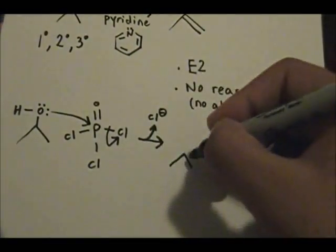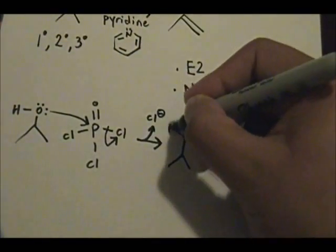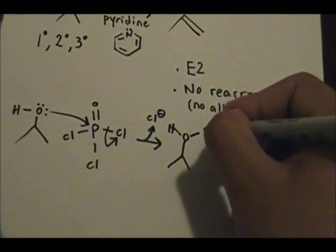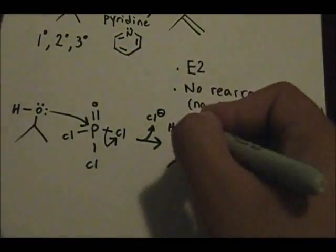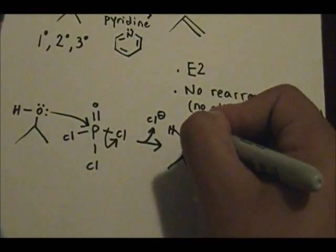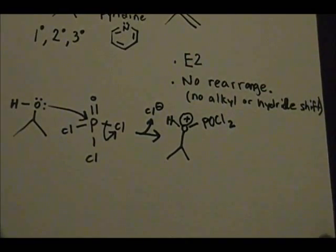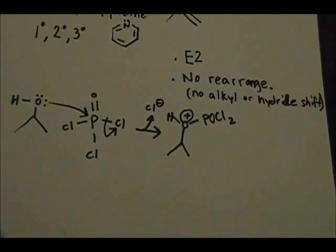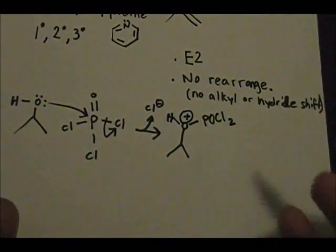Now, the product of this first step is this: you have this H here and you have POCl2. You have a positive charge on oxygen. Now what happens is that you're going to do the elimination step. So again, in this case, this is a very simple example.